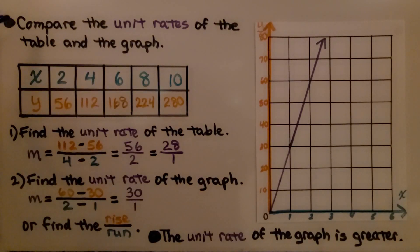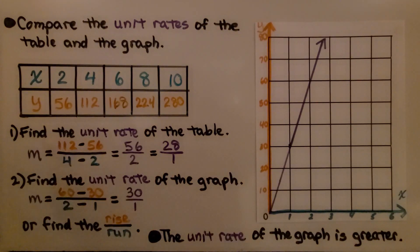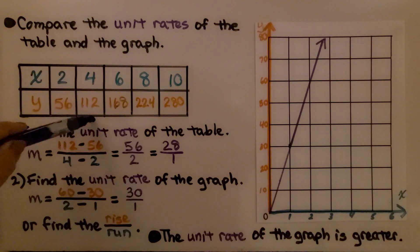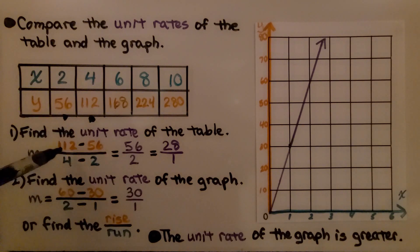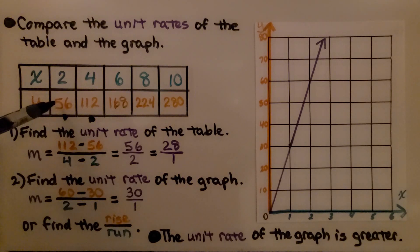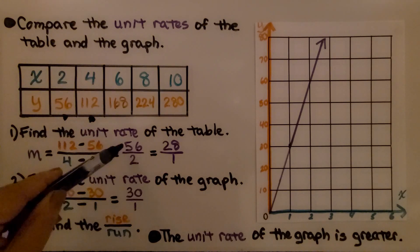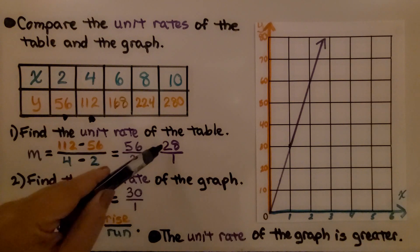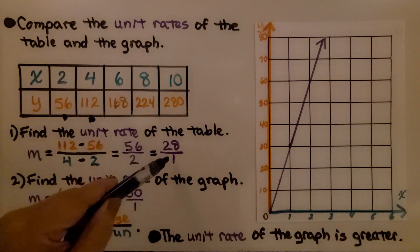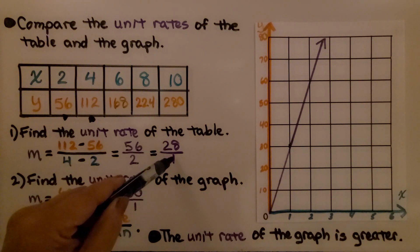We're asked to compare the unit rates of the table and the graph. First, we find the unit rate of the table. We take two pairs — this is the second pair and this is the first pair — and apply the slope formula: 112 minus 56 over 4 minus 2. We get 56 over 2, which simplifies to 28 over 1, giving us a denominator of 1.